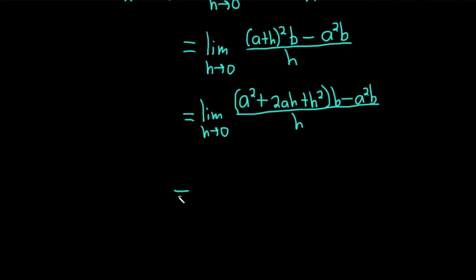So this is equal to the limit as h approaches 0. And we're going to go ahead and distribute this b. So it's a squared times b plus 2ah times b. So I'm going to write that as 2abh plus and then h squared times b minus a squared b. All of this is being divided by little h.